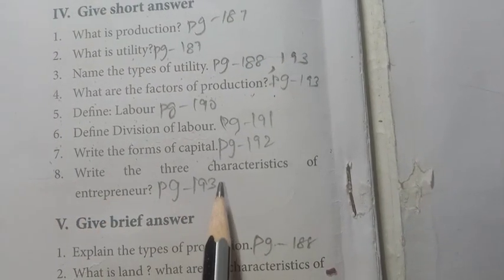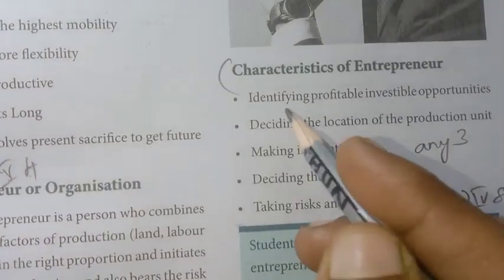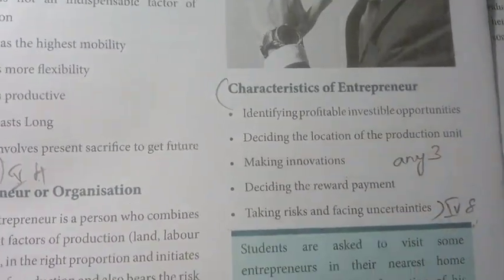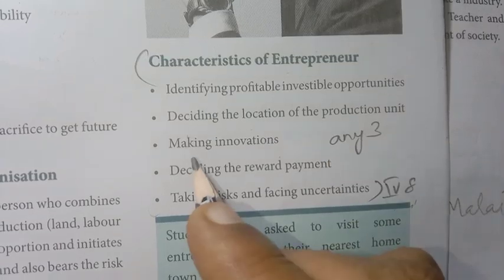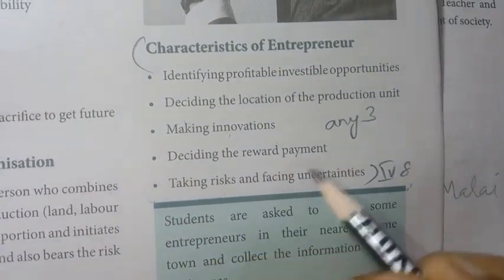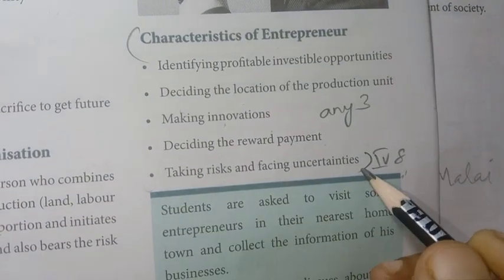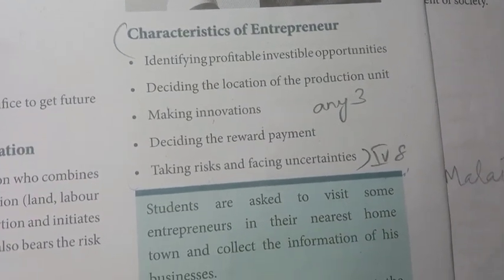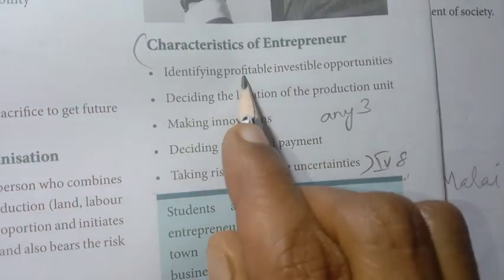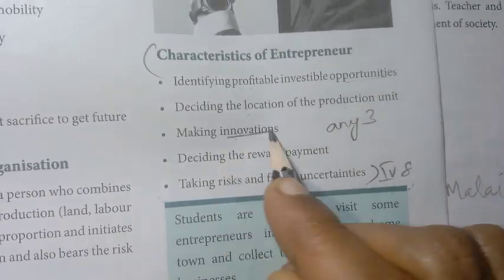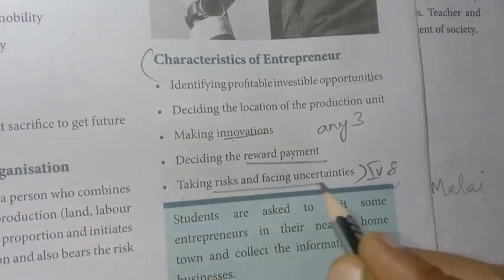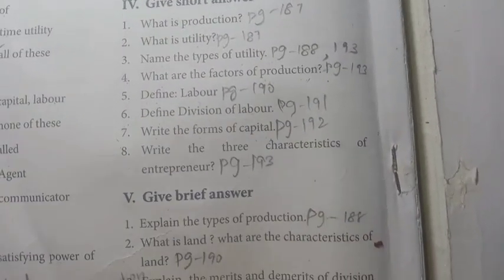Write the three characteristics of an entrepreneur. Page number 193. First, identifying profitable and investable opportunities. Second, deciding the location of the production unit. Third, making innovations. Fourth, deciding the reward payment. Fifth, taking risk and facing uncertainties. These are the characteristics of an entrepreneur. This completes the short answer section. The next video will cover the brief answer questions.